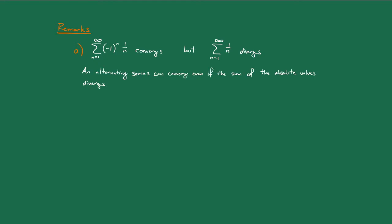So, it's possible for an alternating series to converge even if the sum of the absolute values diverges. Recall, we have a name for this type of series. They're called conditionally convergent series.